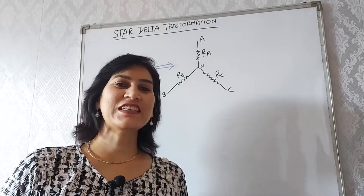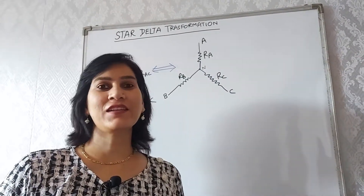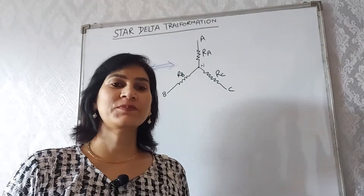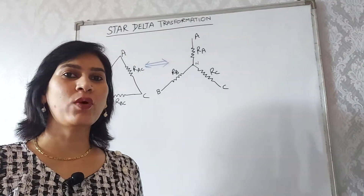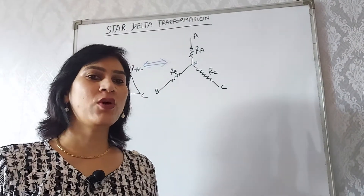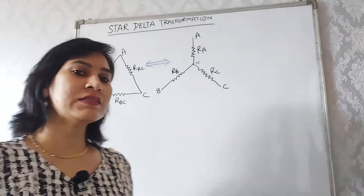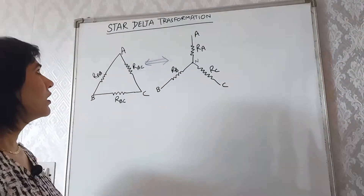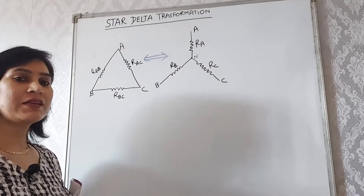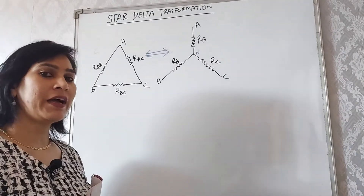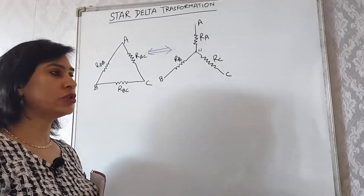Welcome to the lecture series of basic electrical engineering, subject code ECE 101. Today in this video, I will tell you about the star-delta transformation — how we convert a star circuit into delta and how we convert delta into a star.